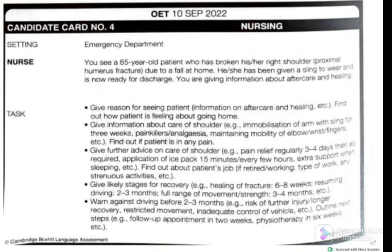During the three-minute preparation time, you should find out the patient's name and how to address them — for example, the patient's name is Maria. You can start with: 'Good morning Maria, how are you feeling now?' No self-introduction is needed because you are the one who gave the sling and are currently caring for the patient. Then tell her you are here to give information on aftercare and the healing process regarding her current situation. Ask if it is okay to discuss.